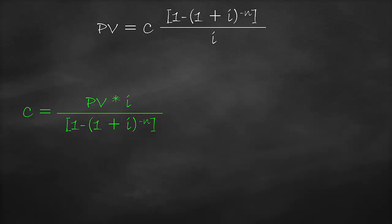Let's arrange the present value of the ordinary annuity formula to get the equivalent cash flow, C. The equivalent cash flow equals the present value times the interest rate, divided by, open first bracket, one minus, open second bracket, one plus the interest rate, close second bracket, to the power of a negative number of periods, close first bracket.